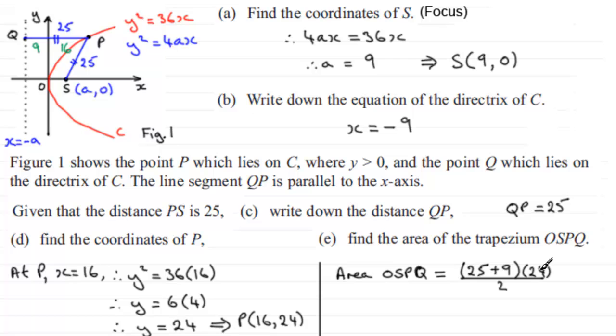Work that out, and you've got 408 units squared. I like to write units squared because we're finding an area, but if you left that off, you're not going to lose marks.